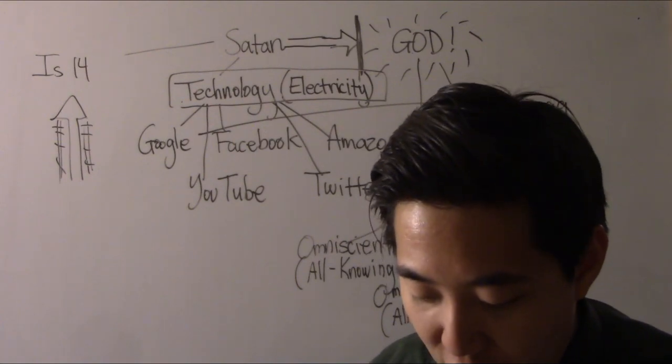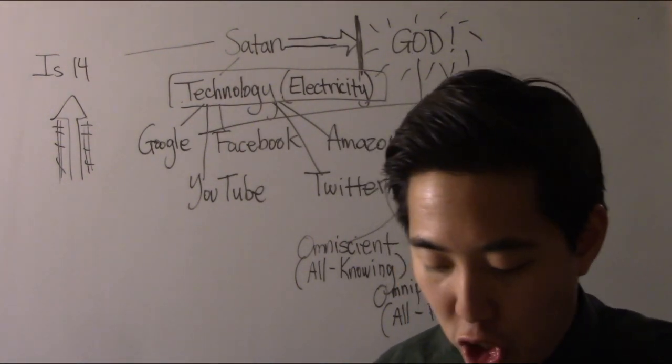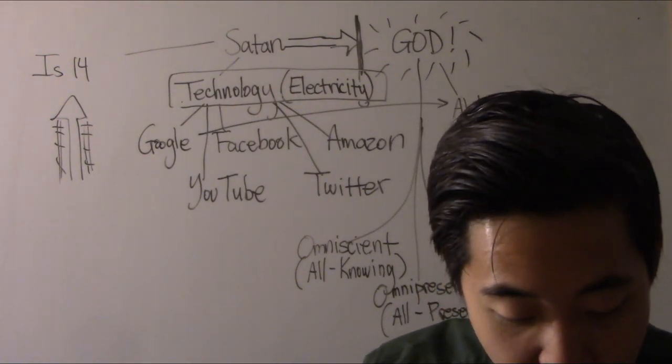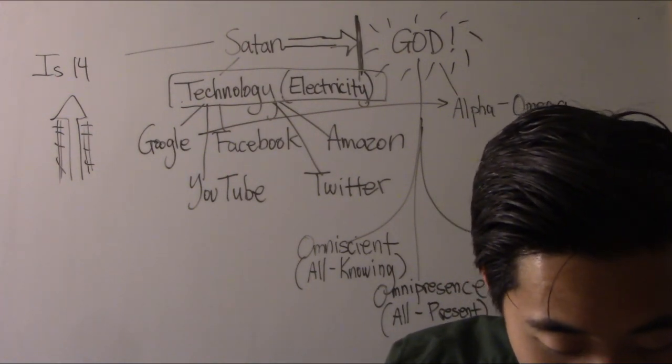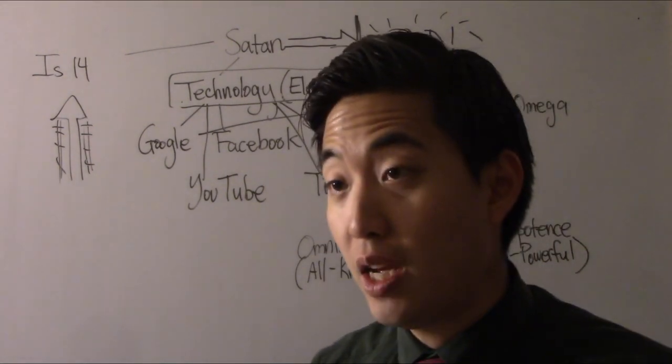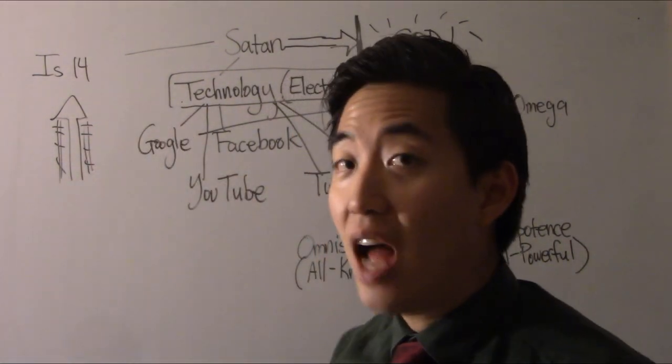Look at Genesis chapter 11. Look at verse 4. And they said, Go to, let us build us a city and a tower, whose top may reach unto heaven. And let us make a name, lest we be scattered abroad upon the face of the whole earth. And that's why the Lord, at verse 8, he scattered them. He didn't like that. Because they're trying to be like God. See that? God don't like it.